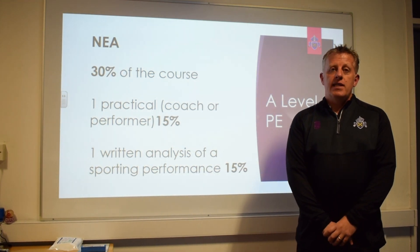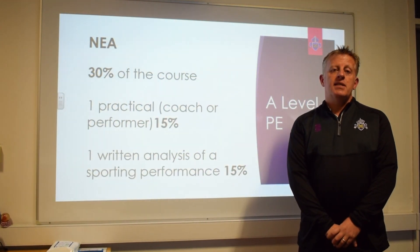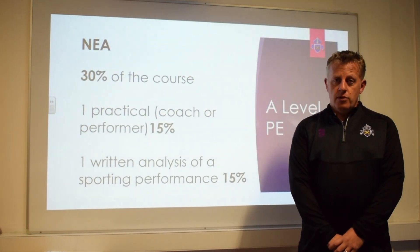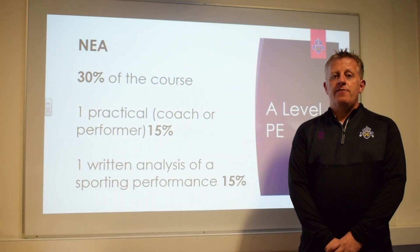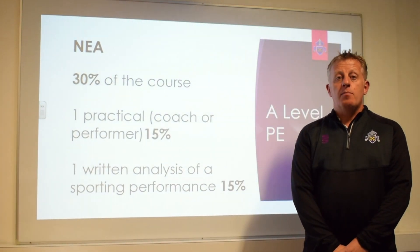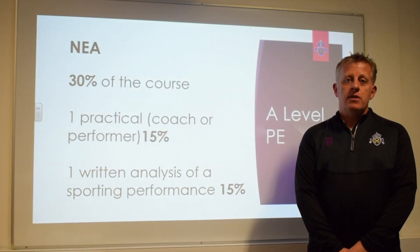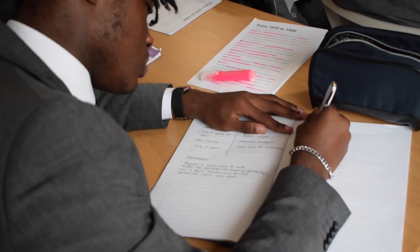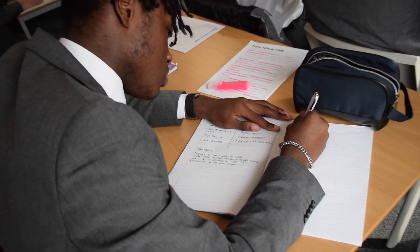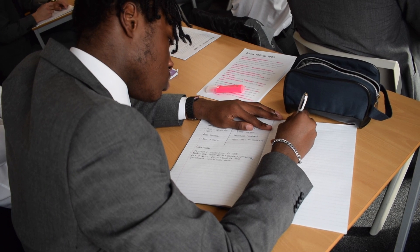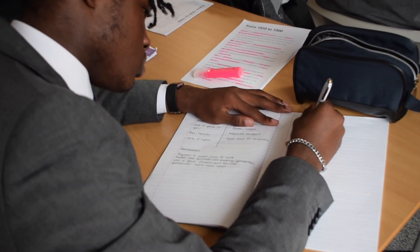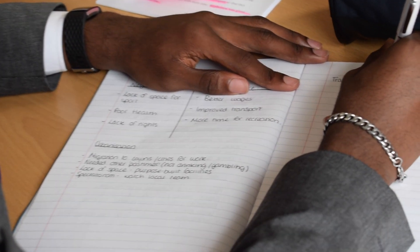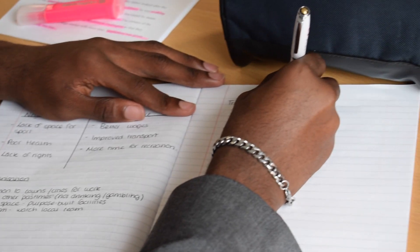We're going to talk about the non-examined assessment, or coursework. The non-examined assessment is worth 30% of the student's overall grade. It comprises two components, each worth 15%. Firstly, we have the practical, where the student can take the role of performer or coach. Secondly, they will write a piece of analysis of a performance, also worth 15%. Students will complete the NEA in year two of the course when they have completed sufficient content to write a detailed account of a sports performance.